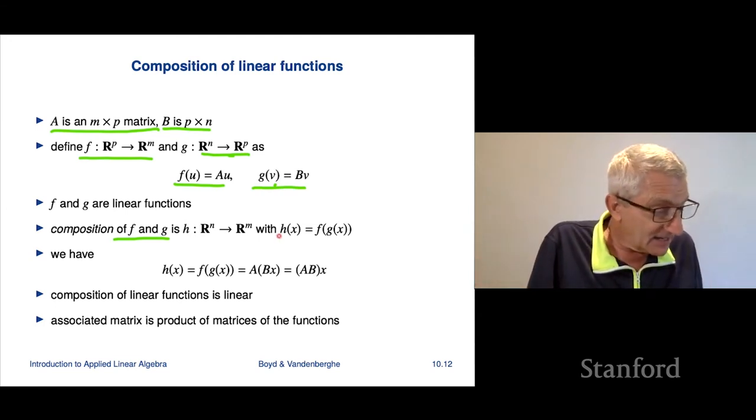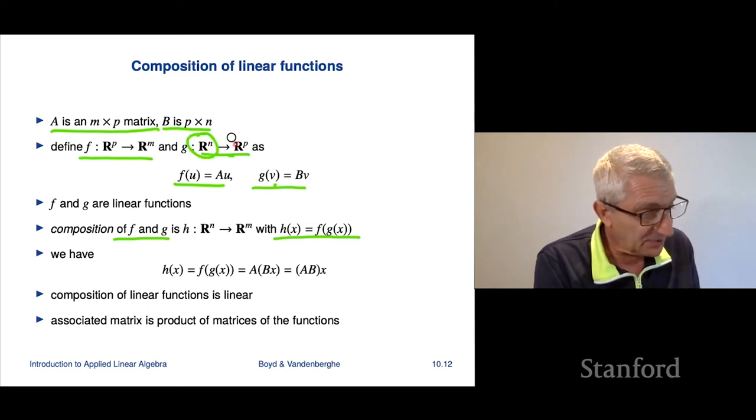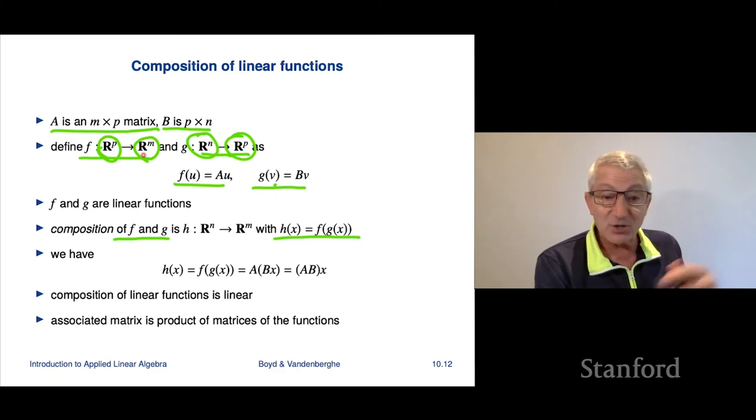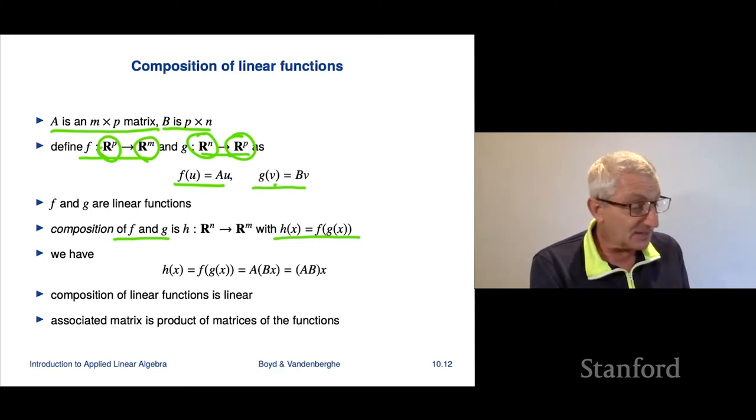Now what that means is this. We're going to define h and so h, let's see, g maps n vectors to p vectors. Then f maps p vectors to m vectors. And so we can do g first, then f, and that would map something, an n vector to an m vector.